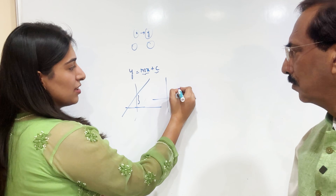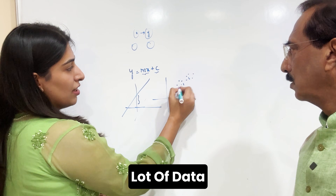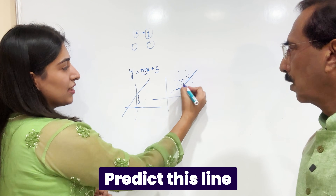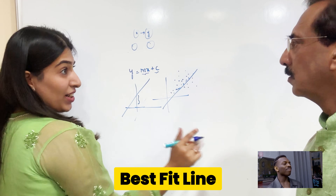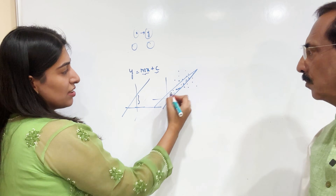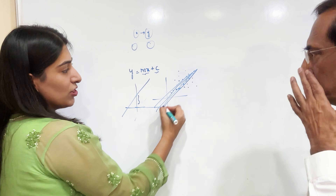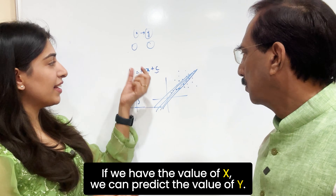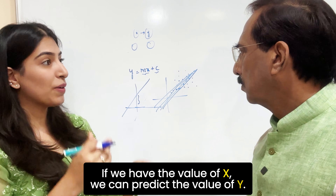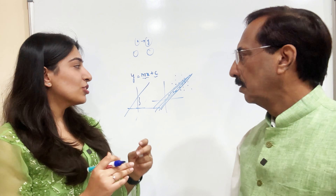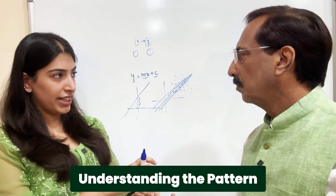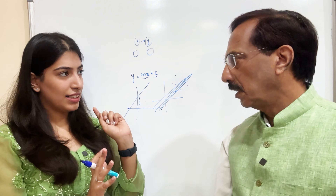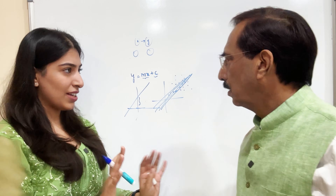I have a lot of data like this. There will be some data that will be very far, but something like this. Now I want to predict this line — the best fit line. It can also be like this, or like this. So we have to find the best fit line. Once we have it, if I get any new value of x, I will be able to predict the y value. This is understanding a pattern from data I already have, so that for new data I can predict the value — basically building a pattern and then predicting.